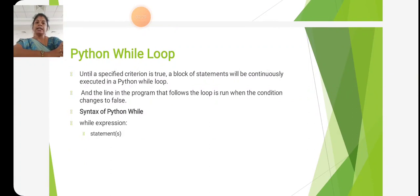Python while loop: a specified criterion is true, a block of statements will be continuously executed in a while loop. The line in the program that follows the loop is run when the condition changes to false. Syntax: while expression: statements.